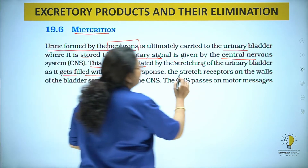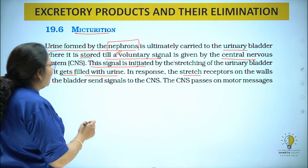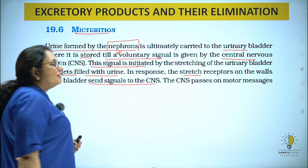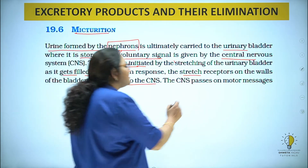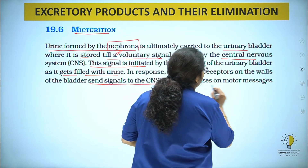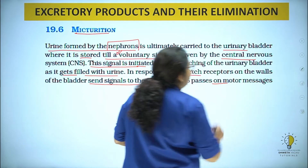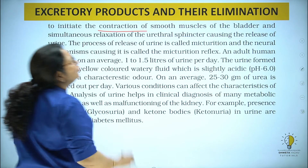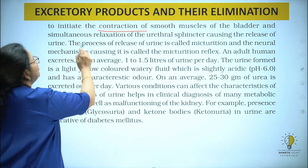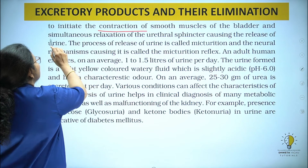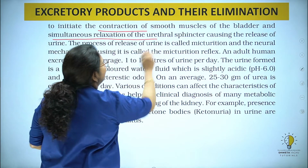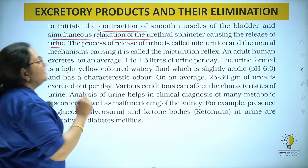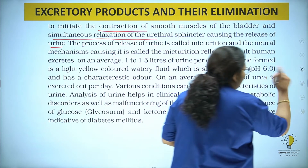In response, stretch receptors on the wall of the bladder send signals to the central nervous system. The CNS passes on a motor message to initiate the contraction of smooth muscle of the bladder and simultaneously causes relaxation of the urethral sphincter, causing the release of urine. Yeh bhoat important baat hai.